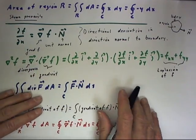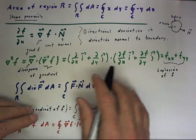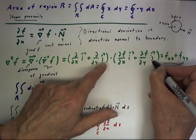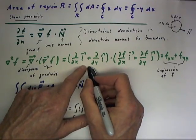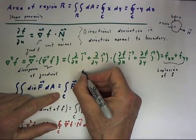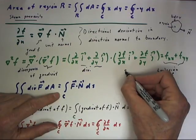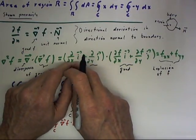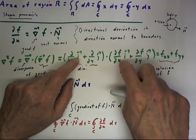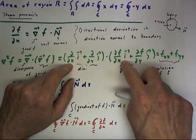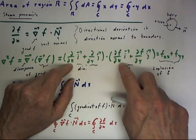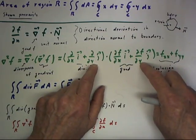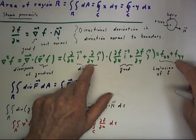With this definition we can write out what that means. The gradient is the partial of f with respect to x times i, plus the partial of f with respect to y times j. If we dot that with the del operator, we get the divergence. We take the partial with respect to x of the i component, giving the second derivative fxx, and similarly the partial with respect to y of the j component gives fyy.